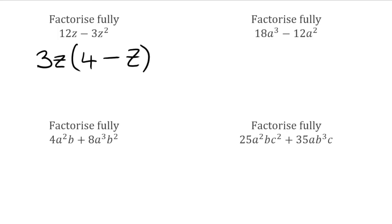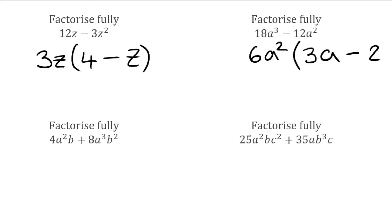Moving on, we have number parts 18 and 12 — the highest common factor is 6. We've got a cubed on the left and a squared on the right, both with base a. Taking the lowest power, we put a squared on the outside of the bracket. Inside: we need 18a cubed, so we have 6a squared multiplied by 3a — the 6 times 3 gives 18 and a squared times a gives a cubed. Then take away, and for 12a squared, we have 6a squared multiplied by 2, since we've already got the a squared.